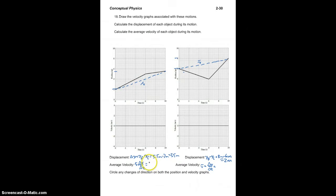It's 10 seconds for both. So 3.5 meters in 10 seconds is 0.35 meters per second. 2 meters in 10 seconds is 0.2 meters per second.